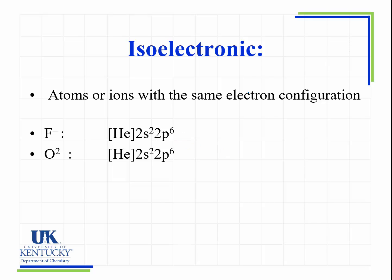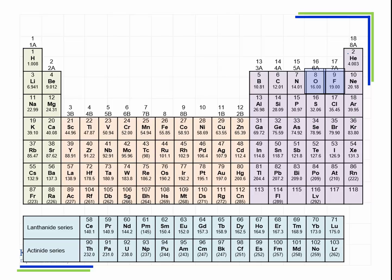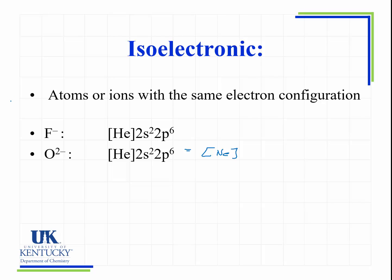The same thing is true for the F-. Helium, we have 2s2 2p5. But if we add one more electron, we have 2p6. So we have the same electron configuration as neon. So both of these have a neon electron configuration.